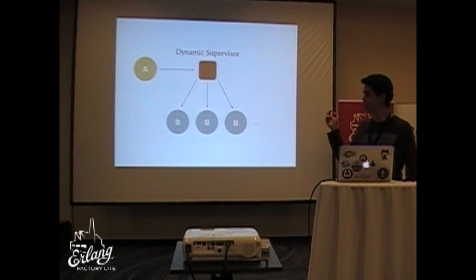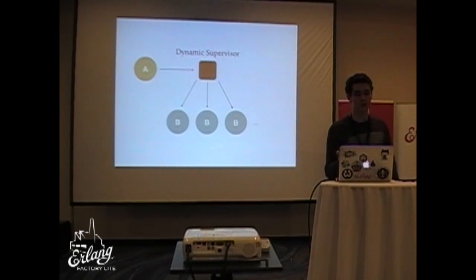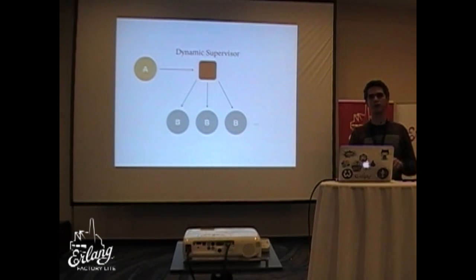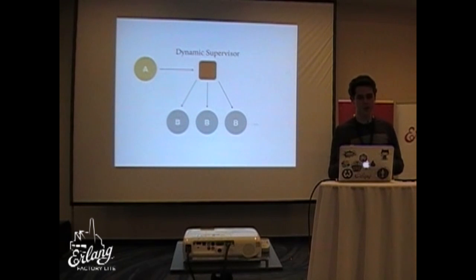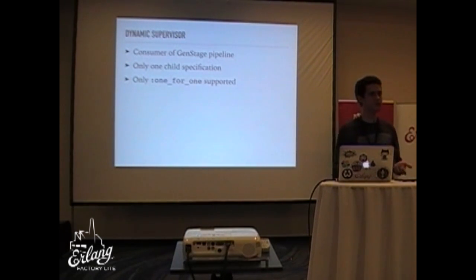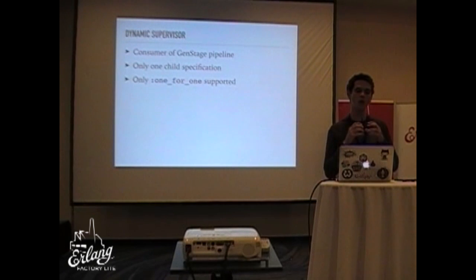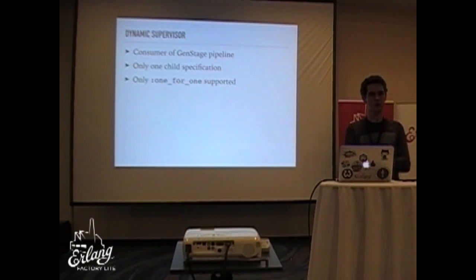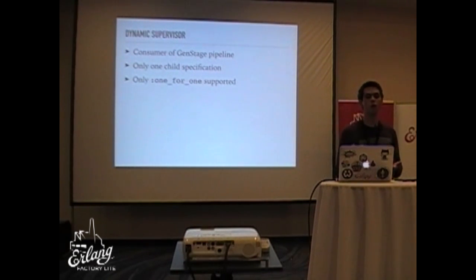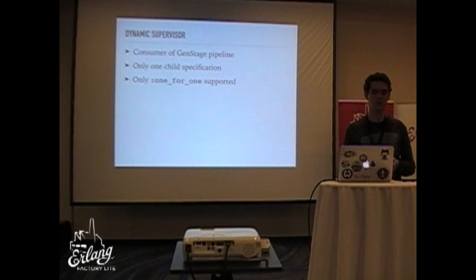As long as events come, these children will be spun off, doing their work and dying. These children don't need to be GenStages themselves — they just have to have the same logic — and the dynamic supervisor handles asking for more data. The dynamic supervisor can be the consumer in a GenStage pipeline, and it has one condition: it only has one child specification. All its children use that same specification, and it only supports the one-for-one strategy — if a child dies, only that child is restarted.